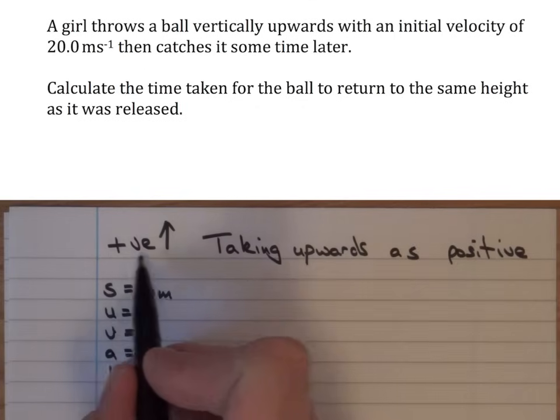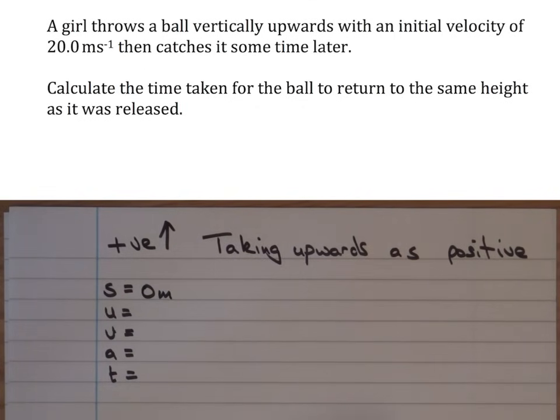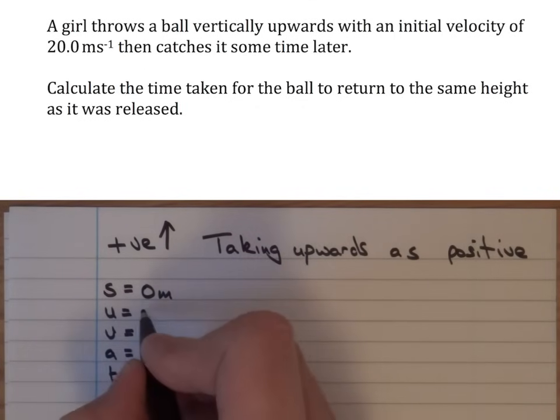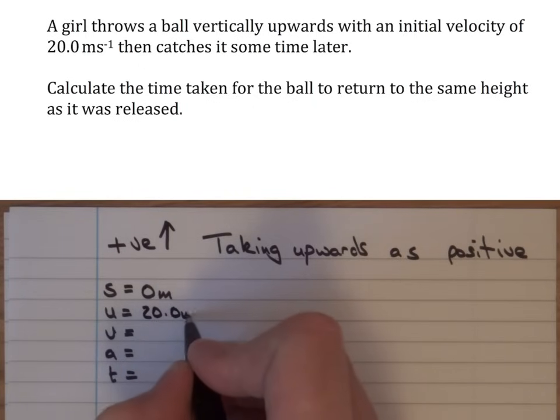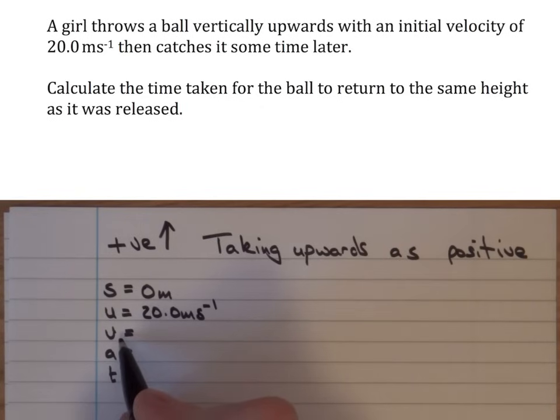Now we've said, using this sign convention, that anything moving upwards is positive. So initial velocity would be plus 20 meters per second. And of course that then means that final velocity v, since the ball's moving downwards, when it's at the same height,